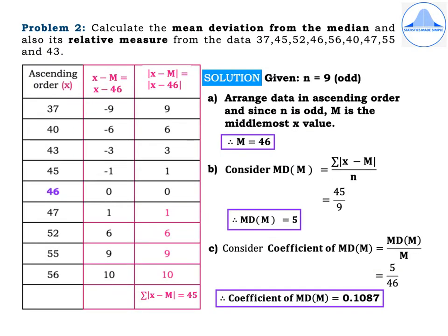Problem 2: calculate the mean deviation from the median and also its relative measure from the data: 37, 45, 52, 46, 56, 40, 47, 55, and 43. The data given is raw data. The first step is to calculate the median. When calculating the median for raw data, it is important to arrange the data in ascending order. In the table, form the first column as ascending order and mark it as x.